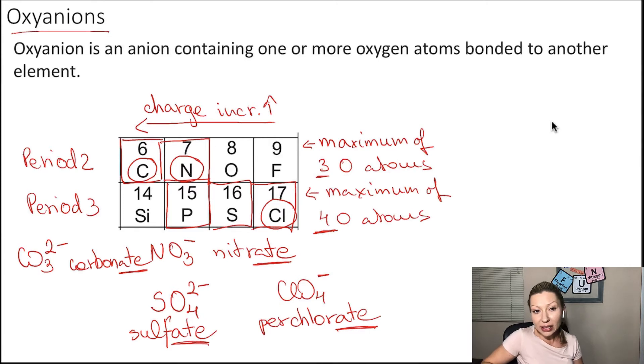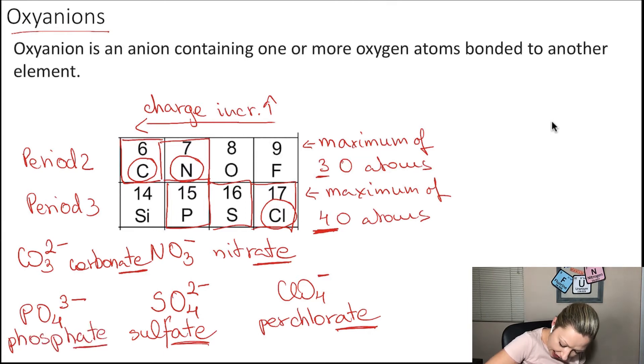The last one in our period is phosphorus. So again, the maximum of four oxygen atoms, which is PO4. Now, I have to increase the charge again. So it's going to be three minus. This is called the phosphate ion. Again, I have an ending of -ate.